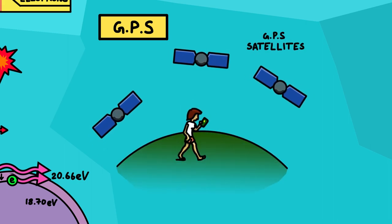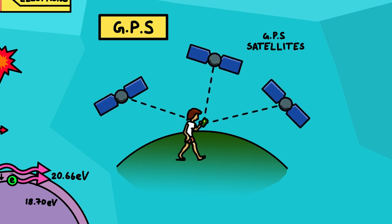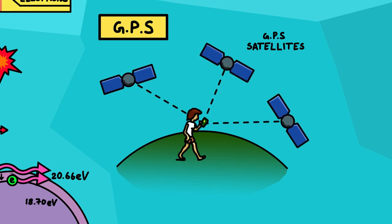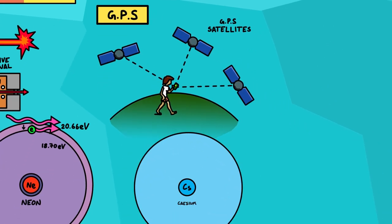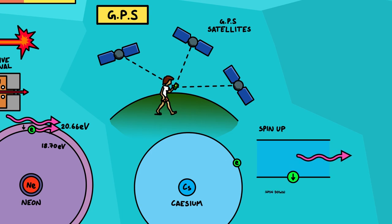The last technology on the list, number five, is GPS. GPS relies on incredibly accurate clocks on GPS satellites. The satellites continuously broadcast their time, and your phone takes these signals and works out where it is on Earth depending on how long the signals took to arrive. The ticking of these atomic clocks depends on the frequency of a transition between two particular energy states in a cesium atom. Because this frequency depends on the laws of nature, all the clocks stay exactly in time and are accurate to one second in 1.4 million years.